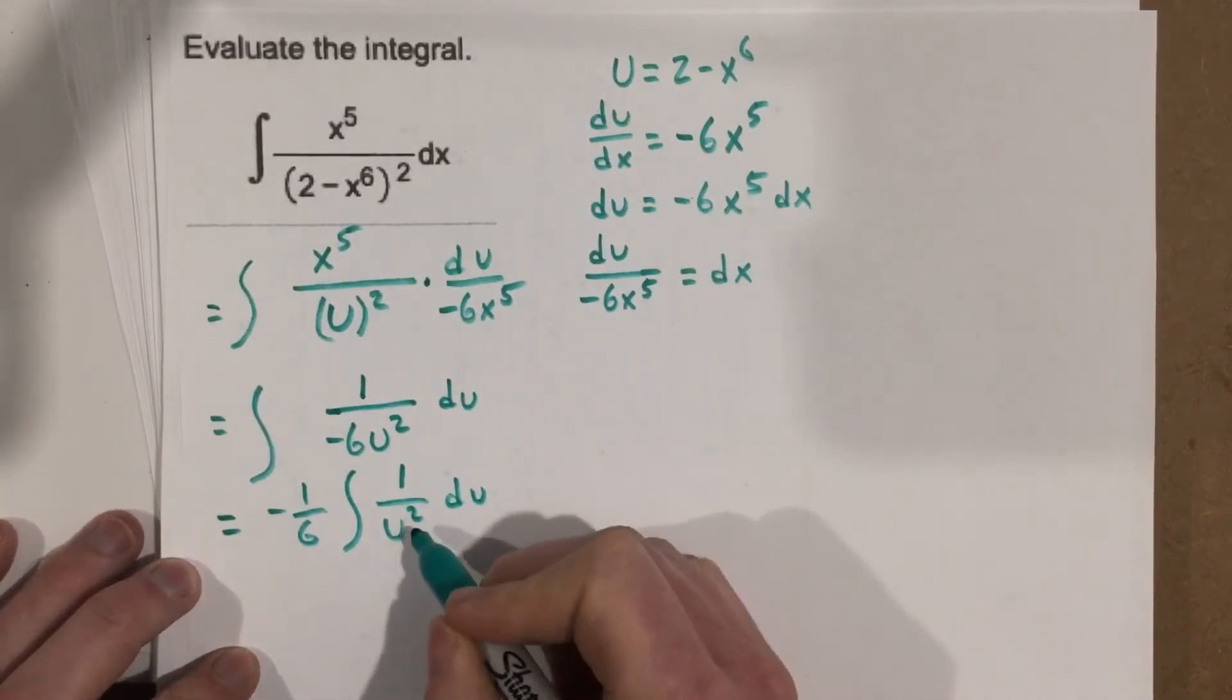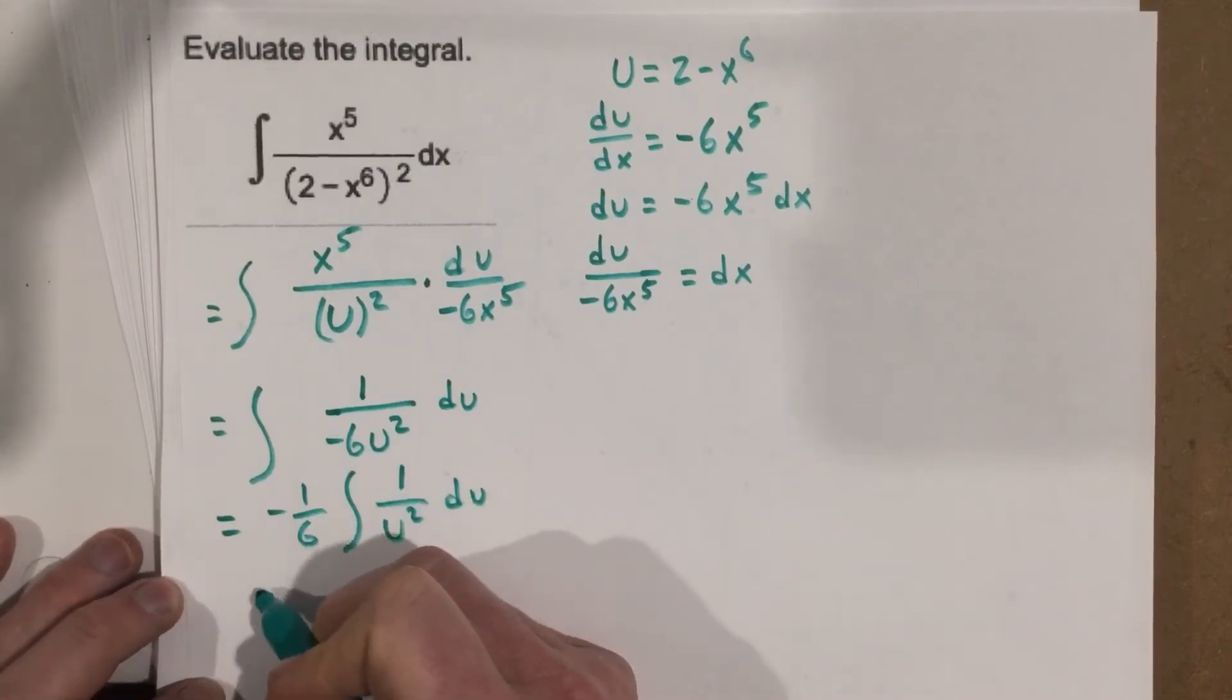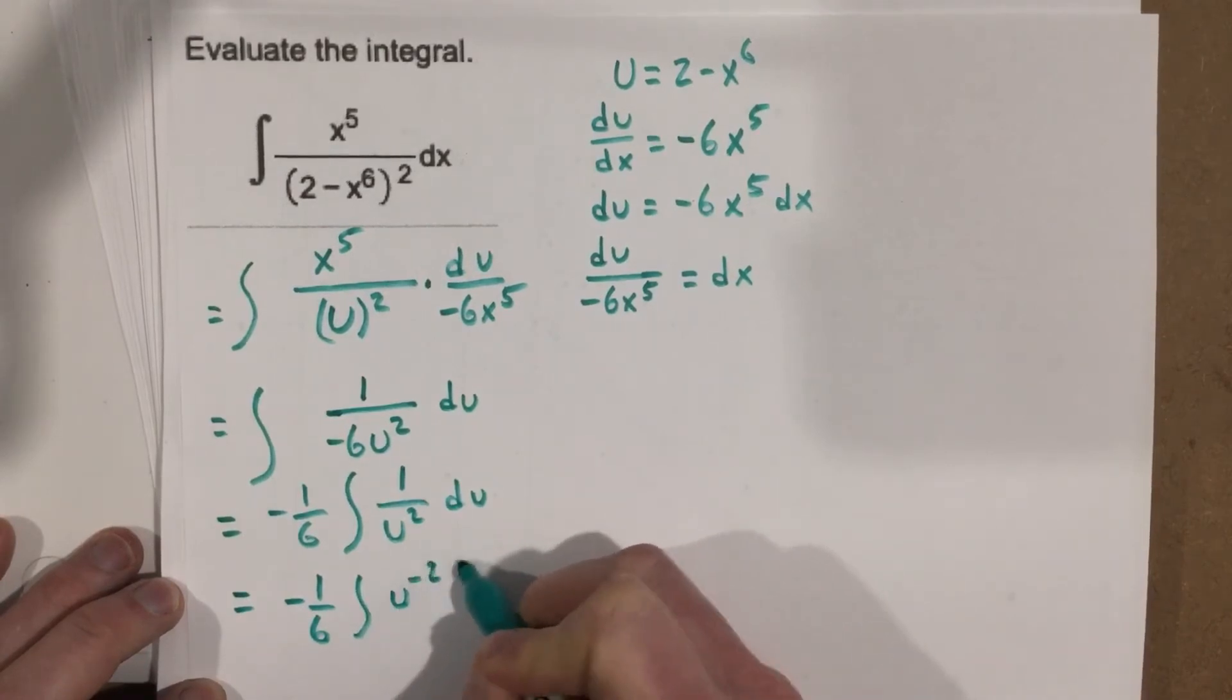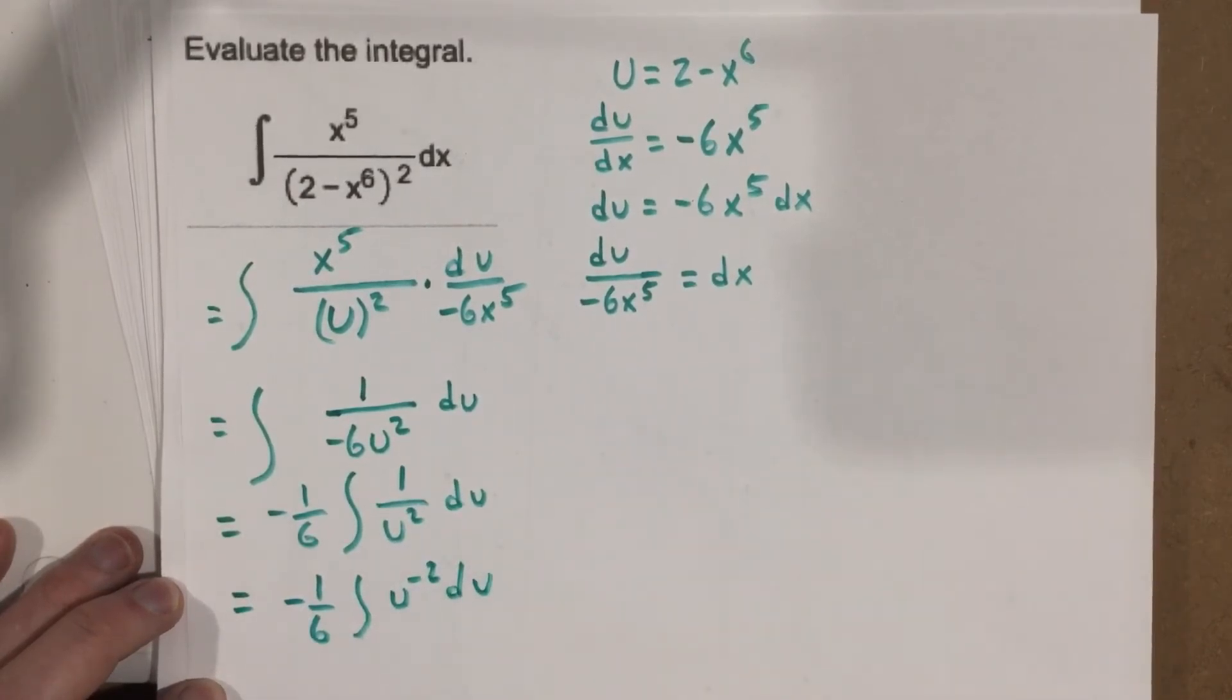So let's go ahead and move this to the top first. So we get negative one-sixth integral of u to the negative 2 du. And let's then add 1 to that exponent and divide.